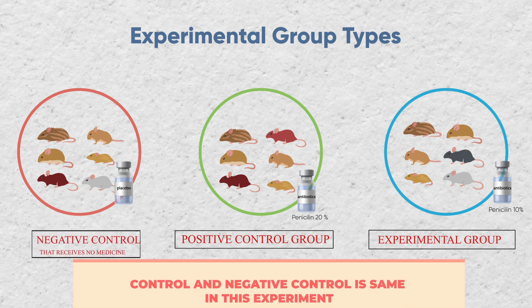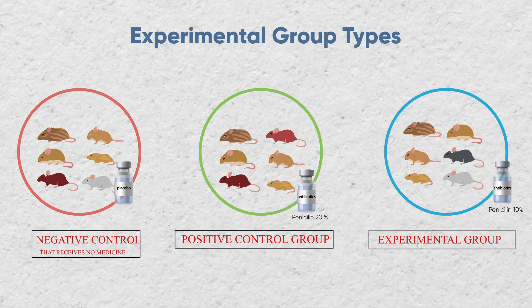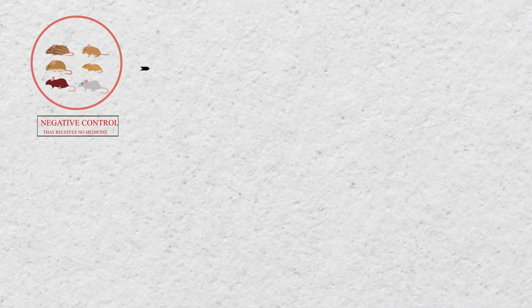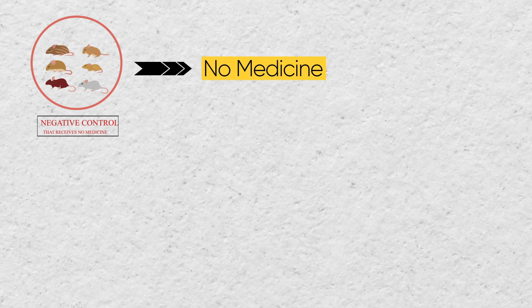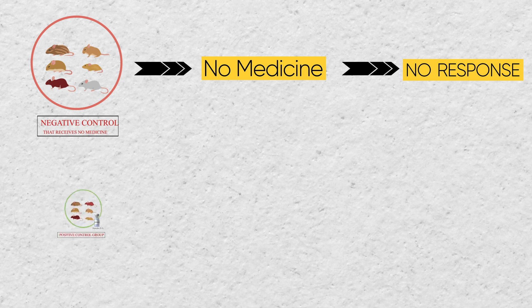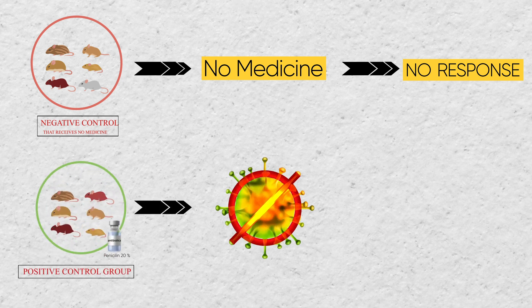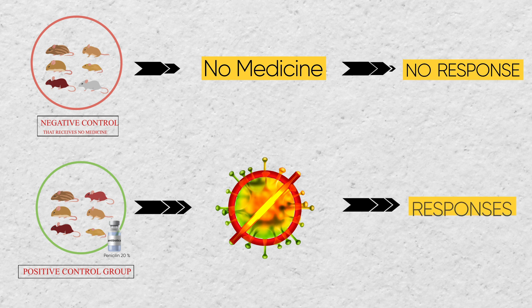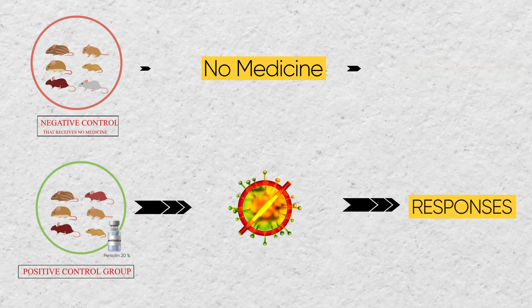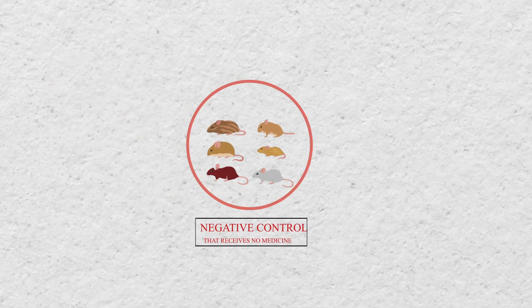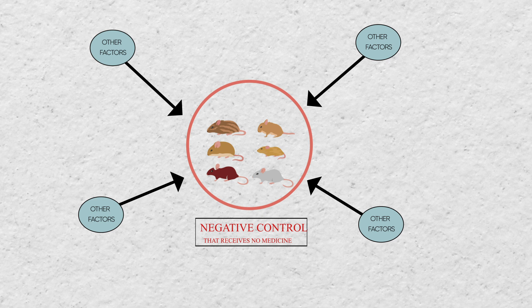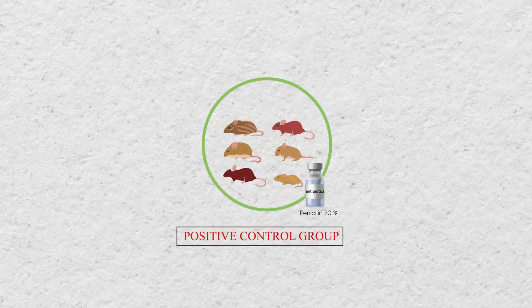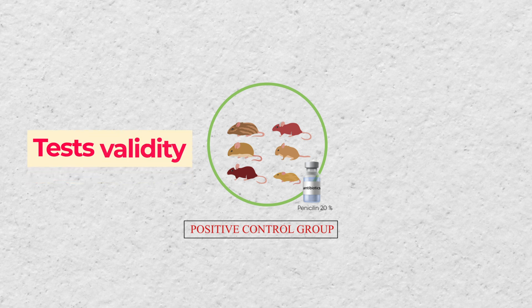Now let's understand the differences between positive and negative control using the above example. The negative control received no medicine — that means negative control produces no response. The positive control was Penicillin 20%, which is known to kill bacteria, meaning it gives a response to the experiment and gives a positive result. Also, negative control helps to find out the influence of other factors in your study, because if you are not giving any medicine and you still get some response, that means there are external factors that could influence your result. Positive control helps to test the validity of the experiment, as you are comparing against a factor that is known to work.